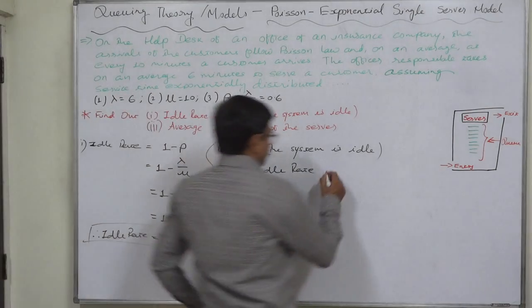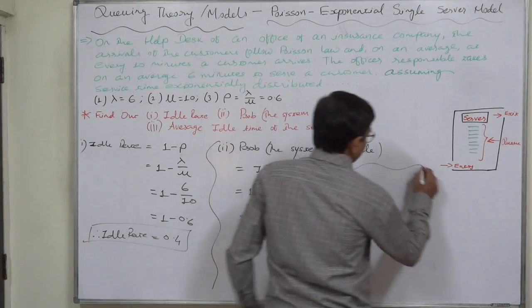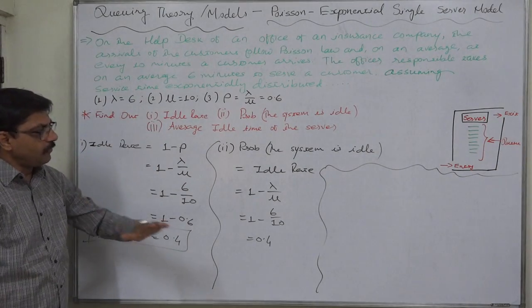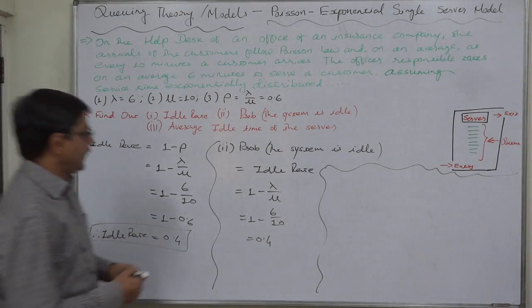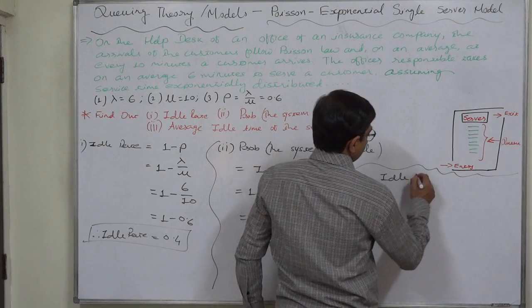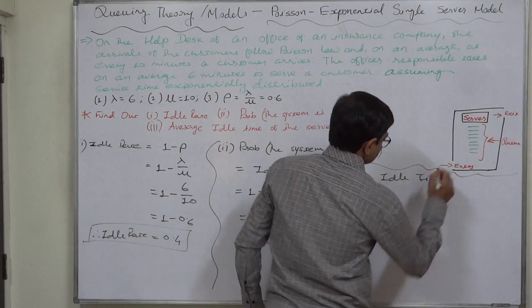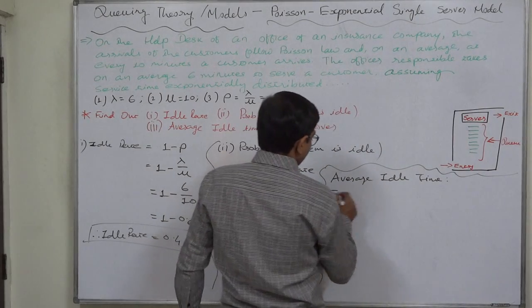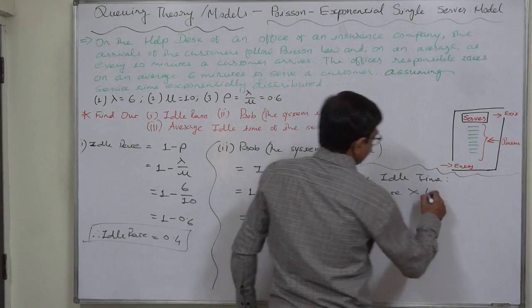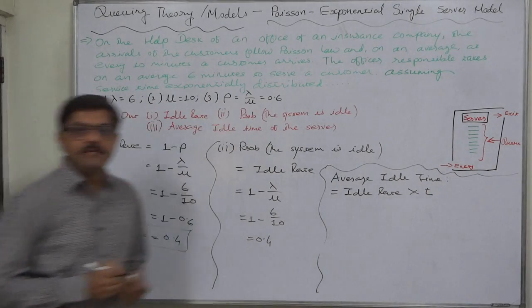Average idle time of the server. Somewhat ambiguous question because to calculate average idle time, first of all the time period T must be defined. Average idle time equals idle rate into T. What value of T are we going to take?